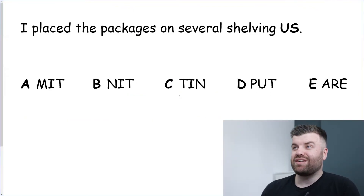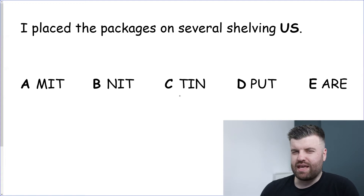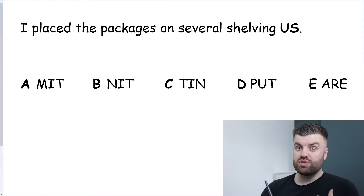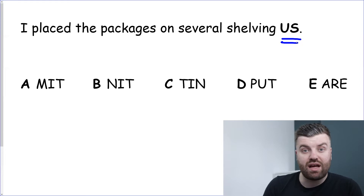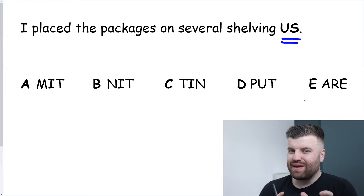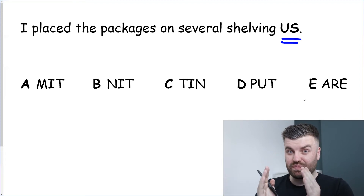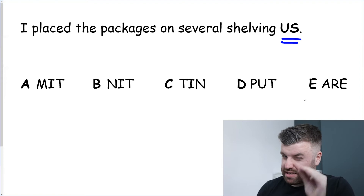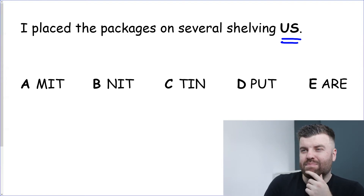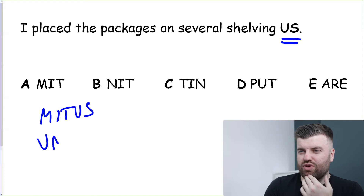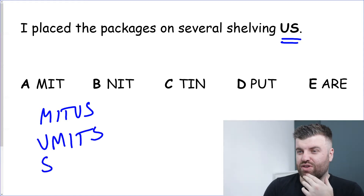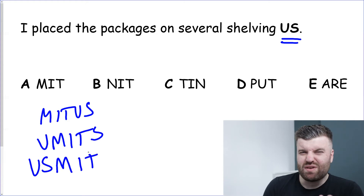Next question: 'I place the packages on several shelving US.' I'm not sure what that word could be, so I'll go to technique two: if you can't figure out the word on your own, go to the options and start trying to put those three consecutive letters into the capital letter word. Be warned — they can go anywhere in the word: the start, middle, or end. Let's try option A — MITT. MITTUS, UMITTS, USMITT — none of those are words, so we eliminate A quickly.